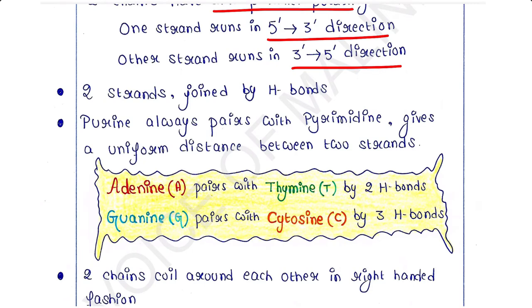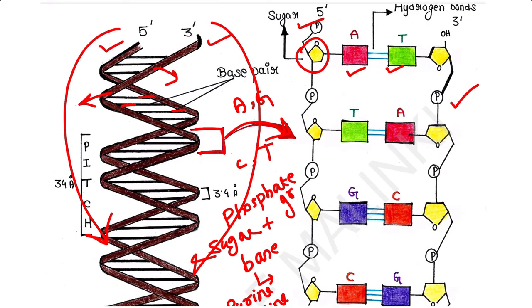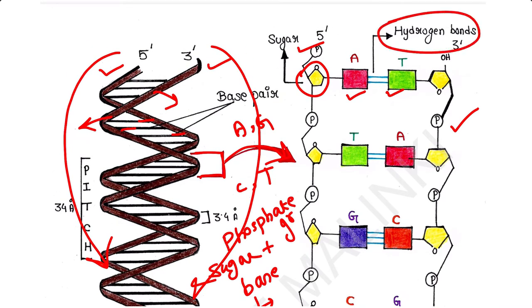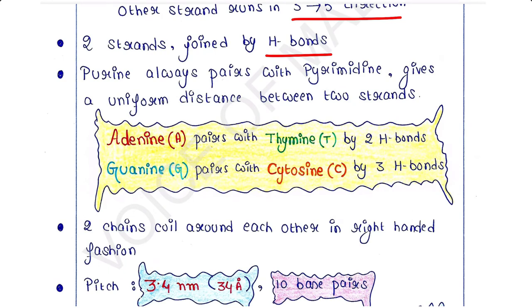The two strands are joined together by hydrogen bonds between bases on opposite strands, forming base pairs. A large-sized purine always pairs with a small-sized pyrimidine — pyrimidine is small and purine is large.